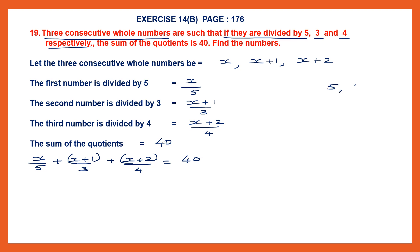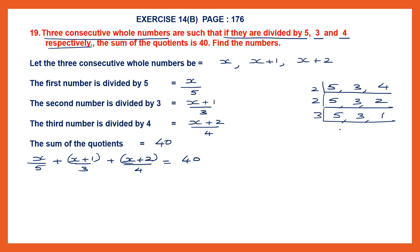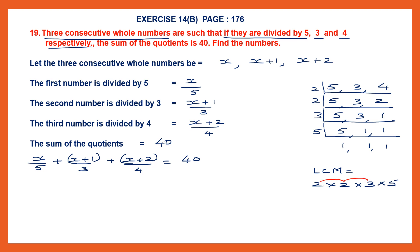Let's find the LCM of 5, 3 and 4. Beginning with 2: 5 as is, 3 as is, 2 twos are 4. Continue with 2: 5, 3 and 1. Then with 3: 5, 1 and 1. Now only 5 is left, divide by 5: 1, 1 and 1. So LCM is 2 into 2 into 3 into 5. That gives us 4 times 3 is 12, times 5 is 60. The LCM is 60.